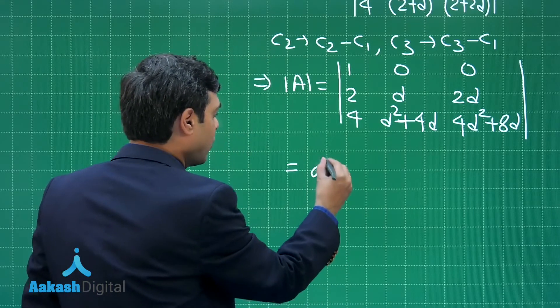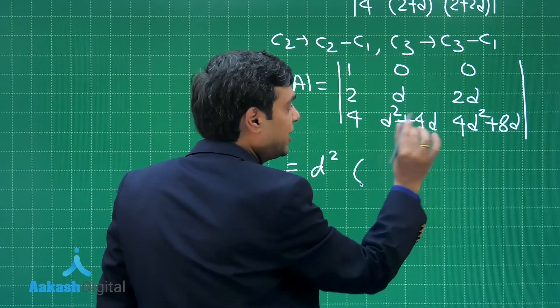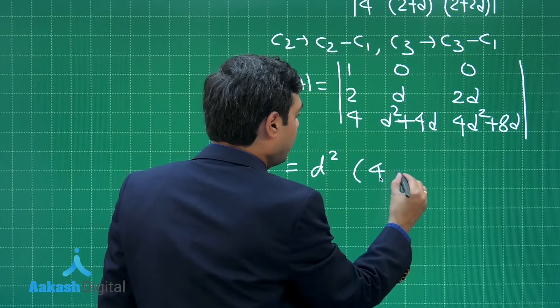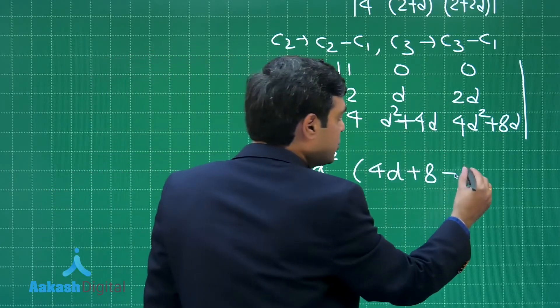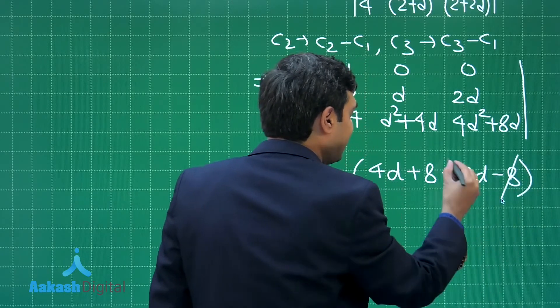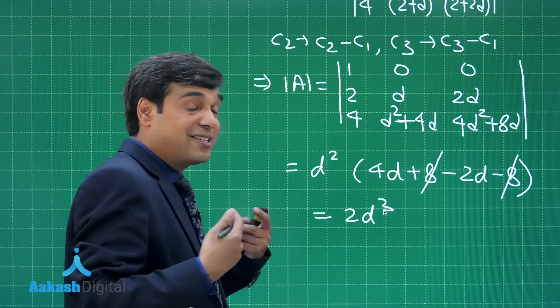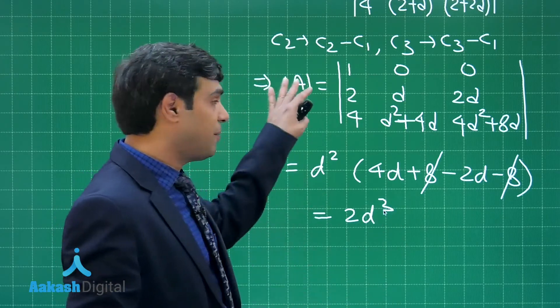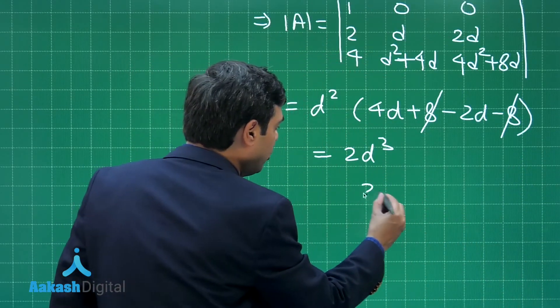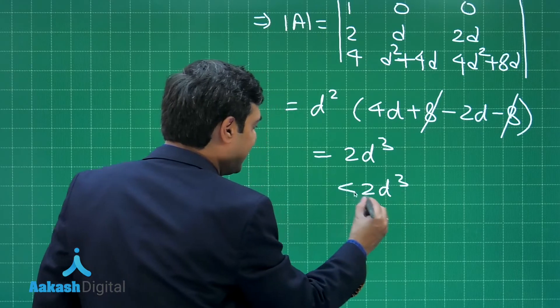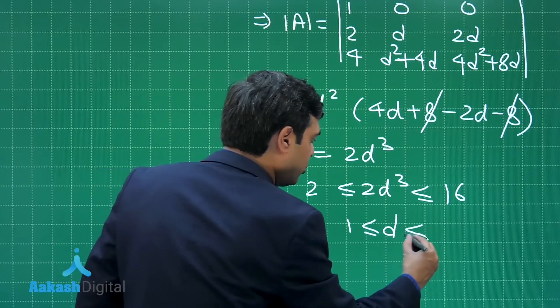Now we can take D common from second and third columns. We have D² multiplied with expanded then. We get simply 1 multiplied with 4D + 8, so we have 4D + 8 minus 2 multiplied with D + 4, so 2D - 8. 8 is cancelled. We are getting result as 2D³, right? Now what is given to me? It is given to me determinant A is lying in the interval 2 to 16. So going with the approach that this term 2D³ is lying in the interval 2 to 16, 2 cancelled we get D is lying in the interval 1 to 2.